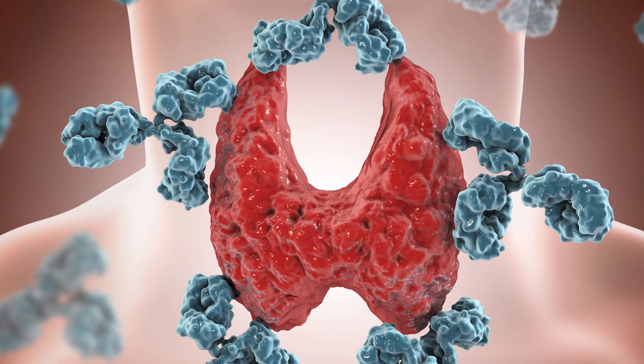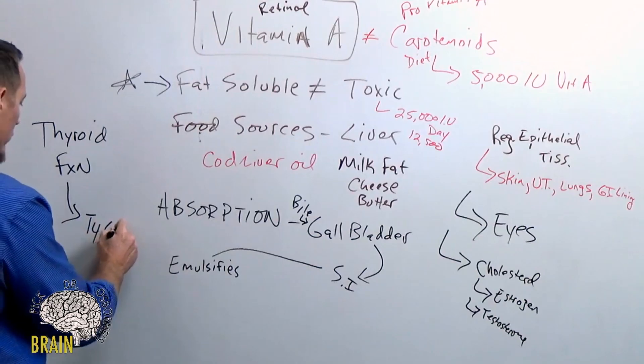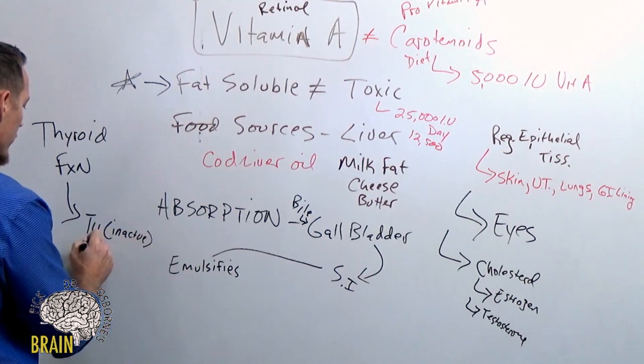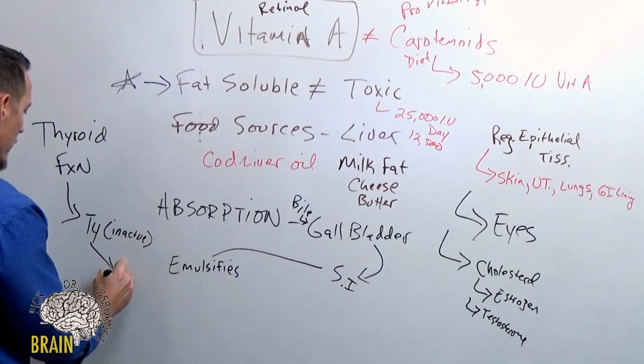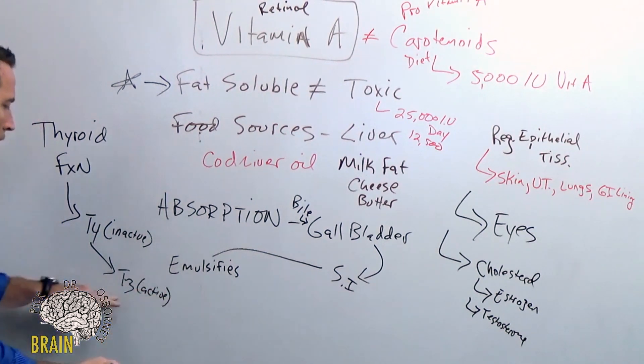Let's talk about what I mean. T4 is inactive thyroid hormone—it doesn't work, it's inactive. It has to be converted into T3, which is the active form of thyroid hormone.